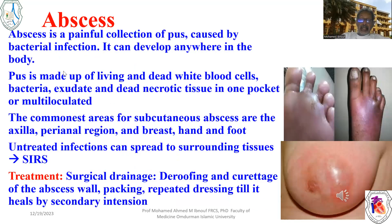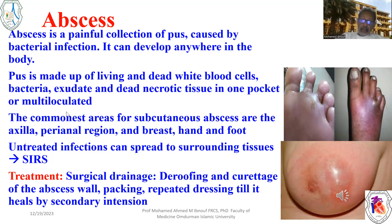The second common subcutaneous swelling is abscess. Abscess is usually a painful collection of pus caused by bacterial infection. It can develop anywhere in the body. Pus is made up of living and dead white blood cells, bacteria, exudate, and dead necrotic tissue in one pocket or a multiloculated abscess. This is an abscess about to rupture, and this is a breast abscess also pointing here.